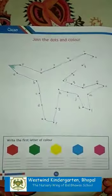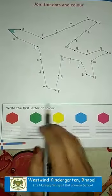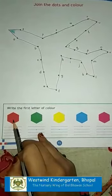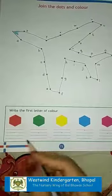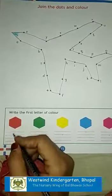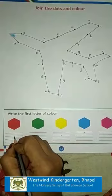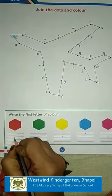Complete this. Write the first letter of the color. Can you identify which color is this? Yes, this is red color. So we are going to write only R for red. R-E-D is red, so we are going to write R.